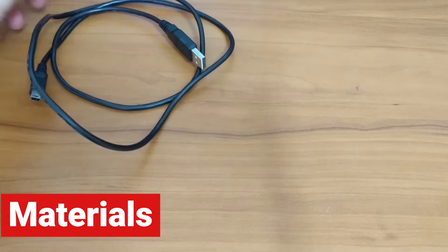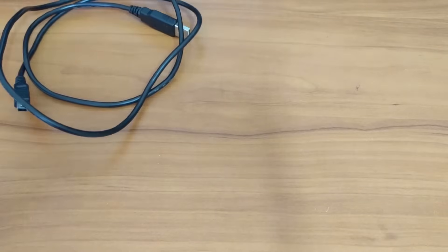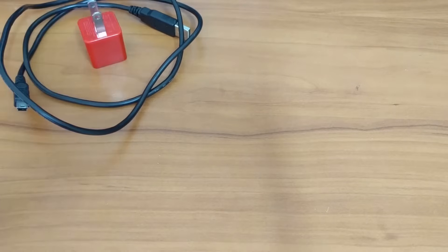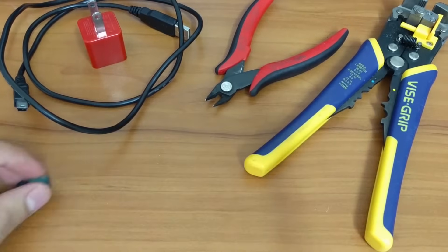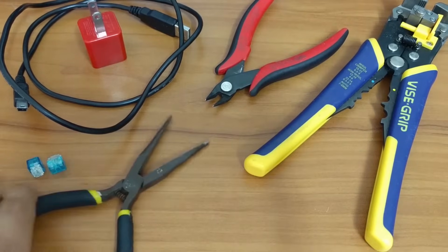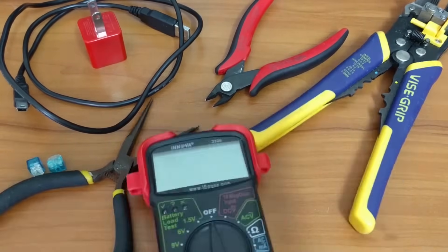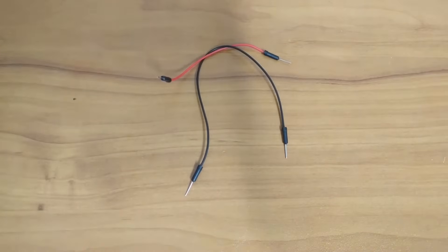The materials that you will need are any old USB cable, a 5-volt wall charger, a wire cutter, a wire stripper, two splice connectors, a needle nose plier, and a multimeter. You will also need two jumper wires.